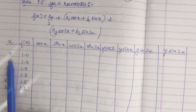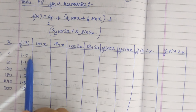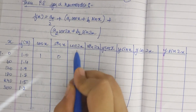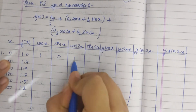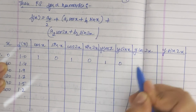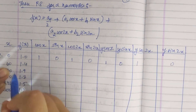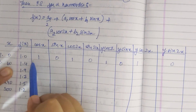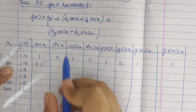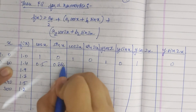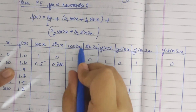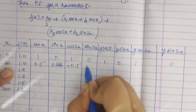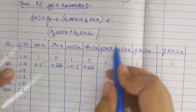For x = 0, f(x) = 1.0: cos(0) = 1, sin(0) = 0, cos(0) = 1, sin(0) = 0. For x = 60: cos(60) = 0.5, sin(60) = 0.866. For x = 120: cos(120) = −0.5, sin(120) = 0.866. We are just placing the values — keep a calculator close and fill them in.